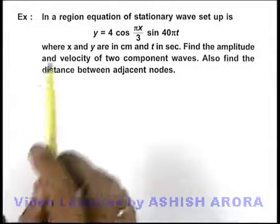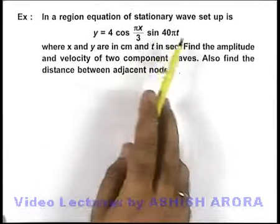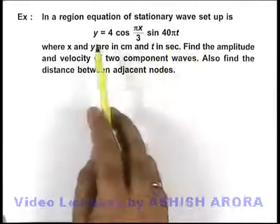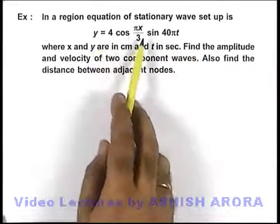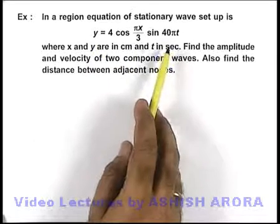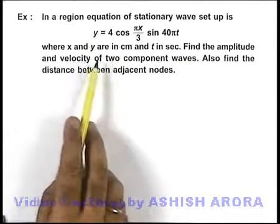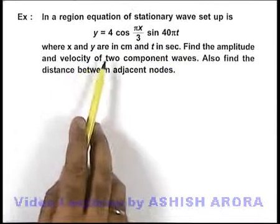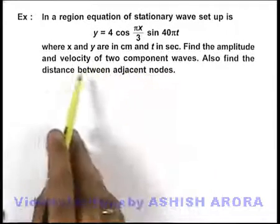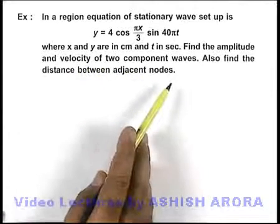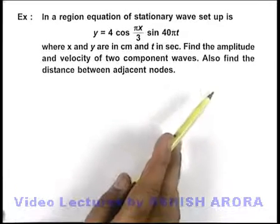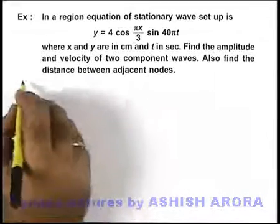In this example we are given that in a region, the equation of a stationary wave setup is y = 4 cos(πx/3) sin(40πt), where x and y are in centimeters and t is in seconds. We are required to find the amplitude and velocity of two component waves, and also find the distance between adjacent nodes.